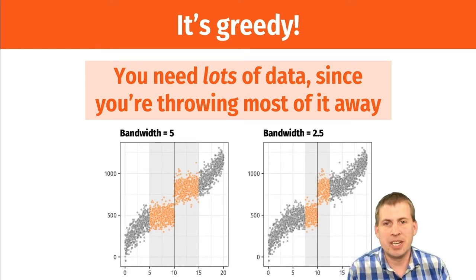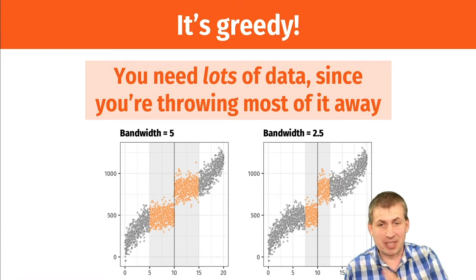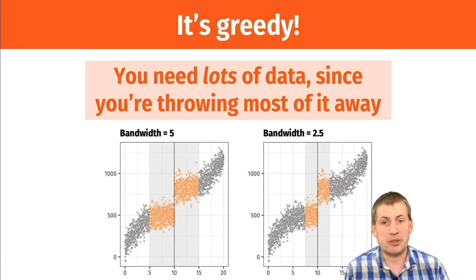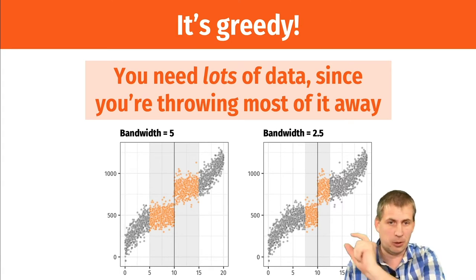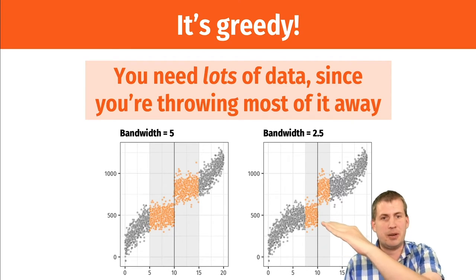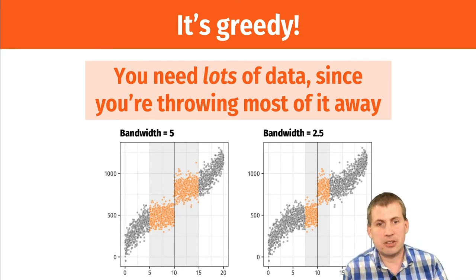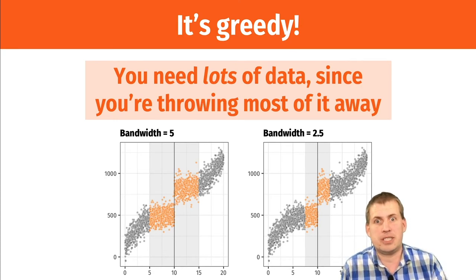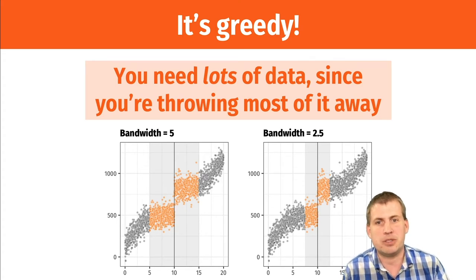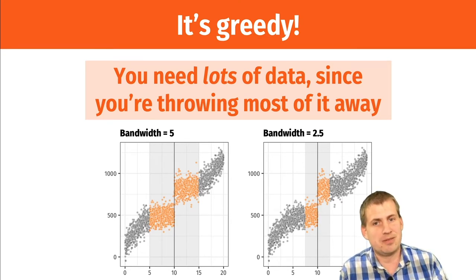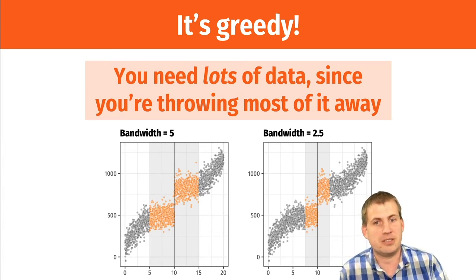If we go back to these pictures, when we're doing an analysis we have like 3,000 dots total. But when doing regression discontinuity, you're only looking at those orange dots. You might only have 500 data points out of the 3,000 that you've collected that you care about. That shrinks your ability to measure effects, making really wide standard errors and uncertain estimates. You need 7 to 10 to 12 times the amount of data you'd need for a regular randomized controlled trial.